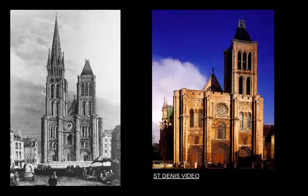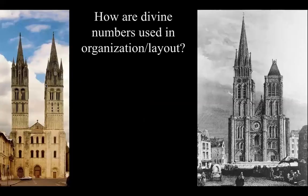Here is Saint-Denis, on the outskirts of Paris. One of the towers is missing, but it's not an enormous church. It's important to the French monarchy — it is actually the burial spot of some of the kings. When you look at the exterior, it is organized based on divine numbers. Who can give me a divine number that they see visually represented?